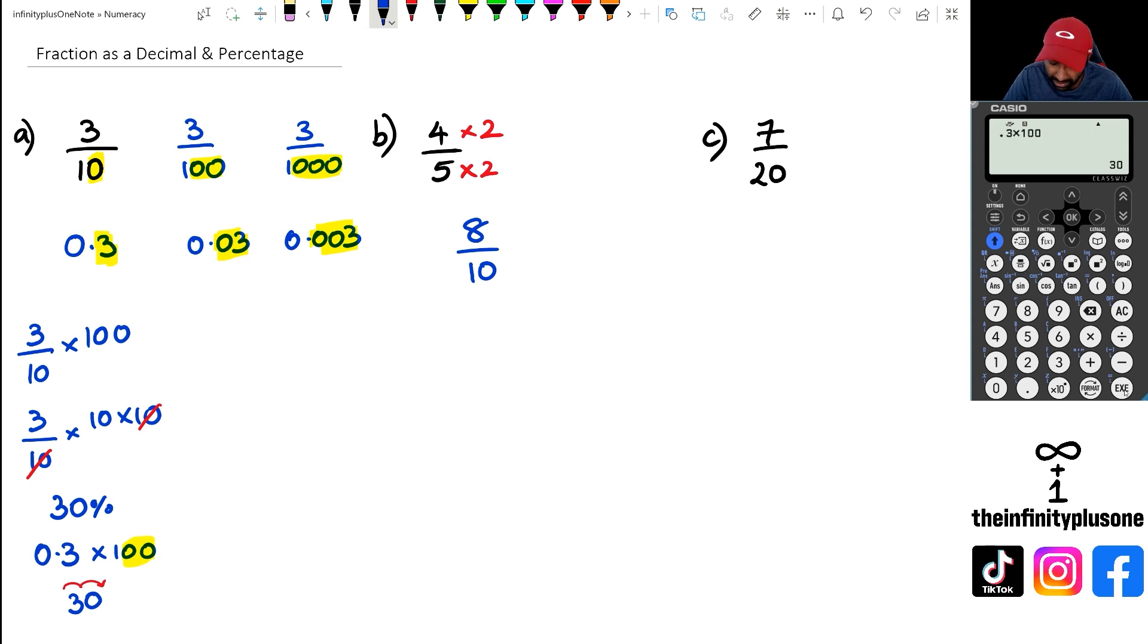8 over 10 is a fraction. If I want to convert this to decimal, I look at the number of zeros in my denominator - that's 1. So I'm actually moving the decimal point one spot to the left. So 8 over 10 as a decimal is going to be 0.8.